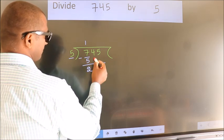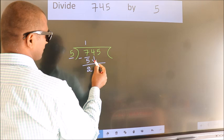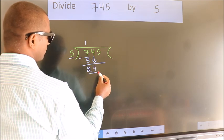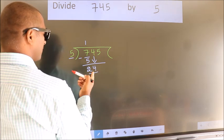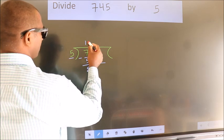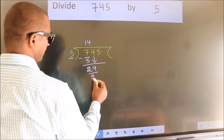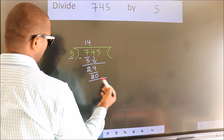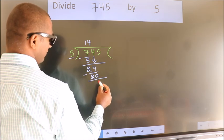After this, bring down the beside number. So 4 down. So 24. A number close to 24 in 5 table is 5 fours 20. Now we subtract. We get 4.